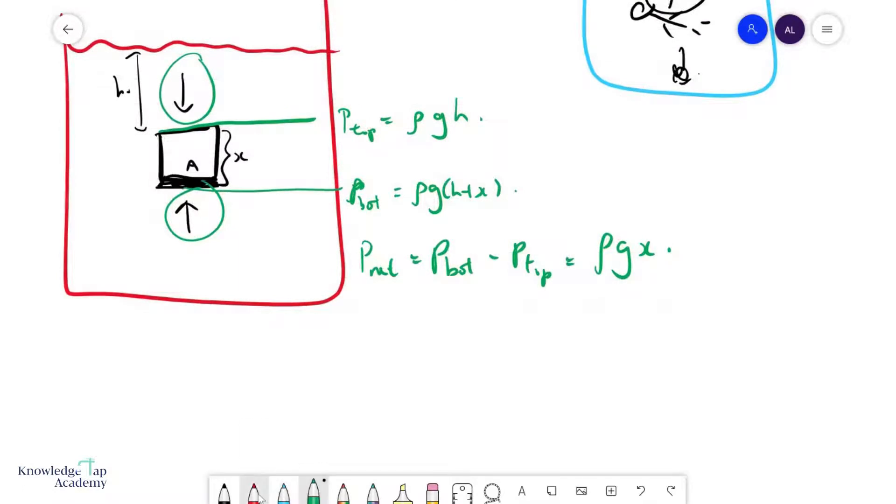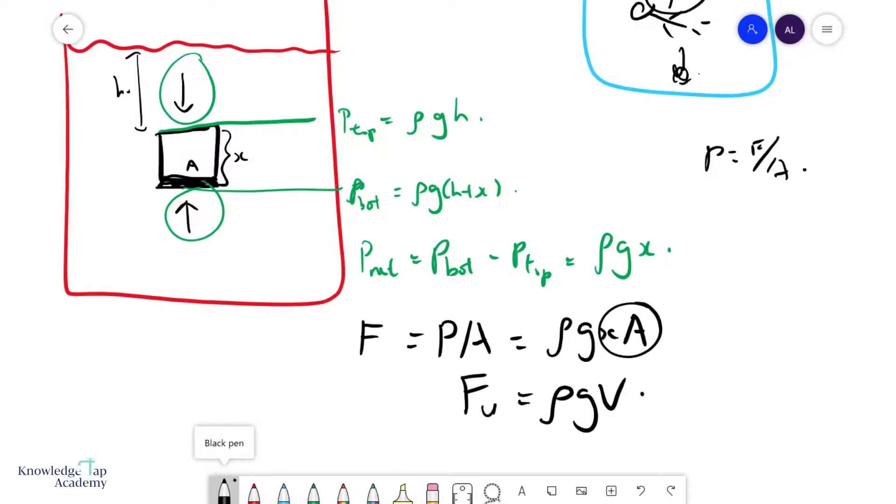Now, what if I want to turn this into a tangible force? Remember that pressure equals the force over an area. And so the force is simply equal to pressure times area. And so this net force that you experience due to the pressure difference is ρGX times the cross-sectional area. And X times A is the volume of the object. And so we call this force upthrust, or let's call this F subscript U. And that is the formula for upthrust.